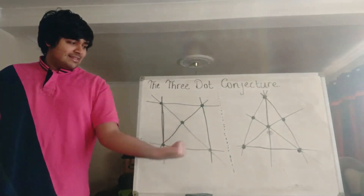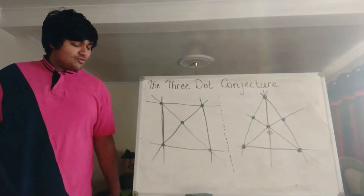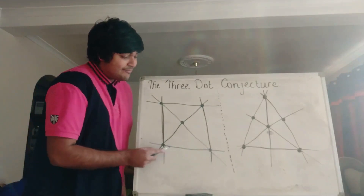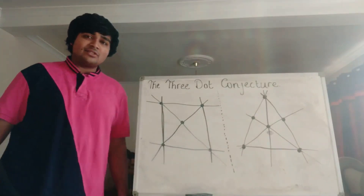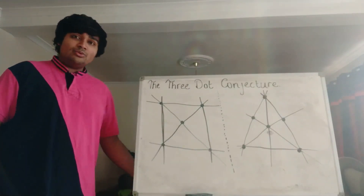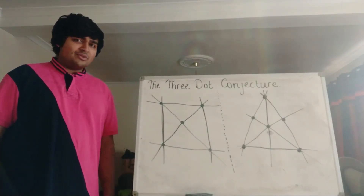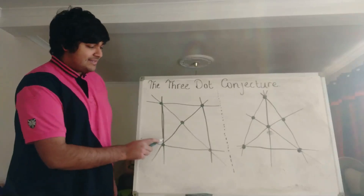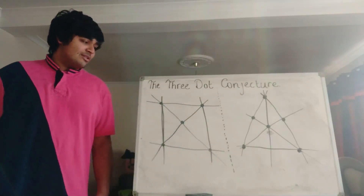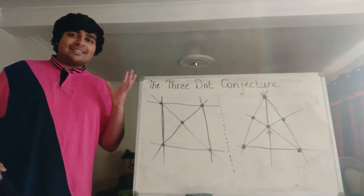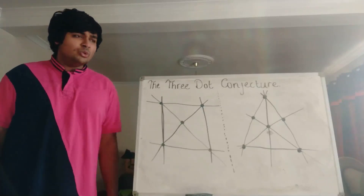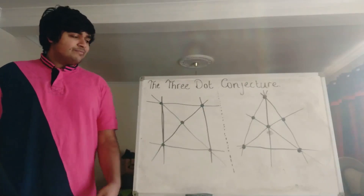In other words, you will never be able to have a dot diagram where every line has at least three dots on it. So in this case, the conjecture is true because if we look at this line here, we only have two dots on it. It's not to say that all lines will have two dots on — clearly this line here has three dots on, and this line here has three dots on. But at least one line will have at most two dots on.